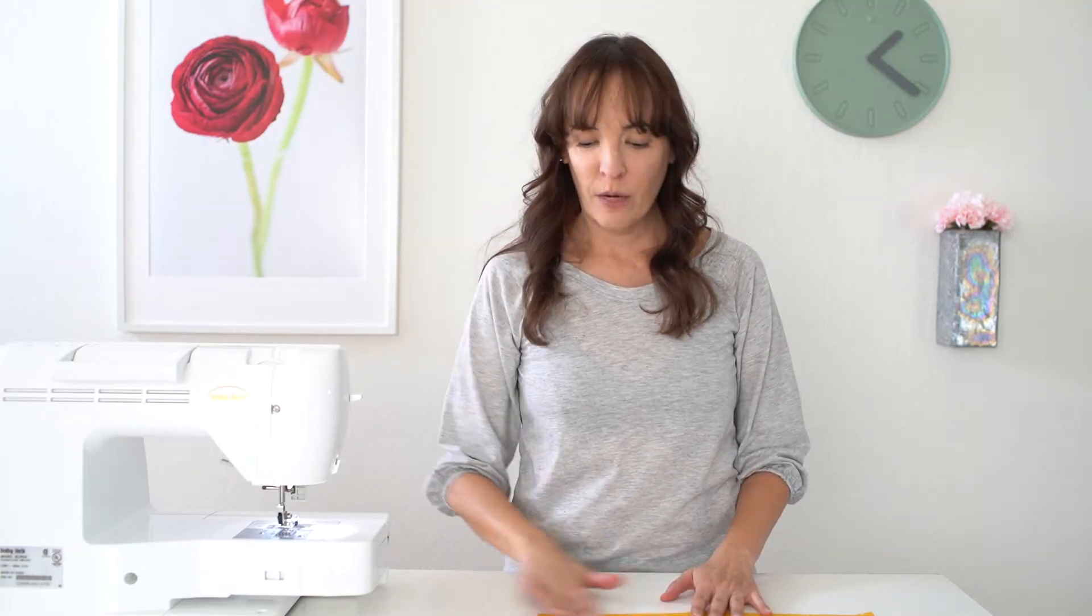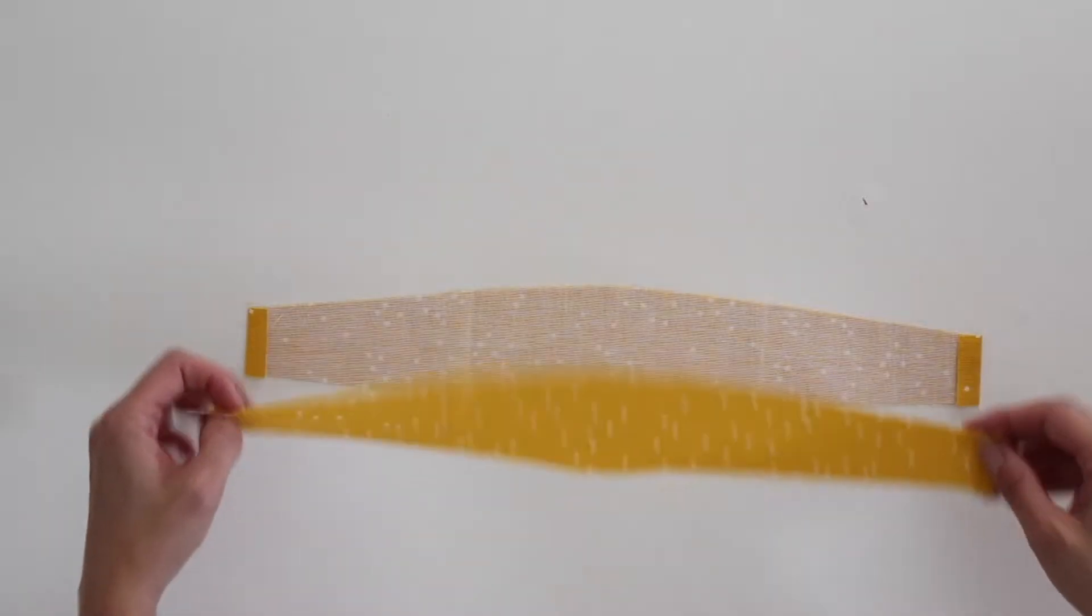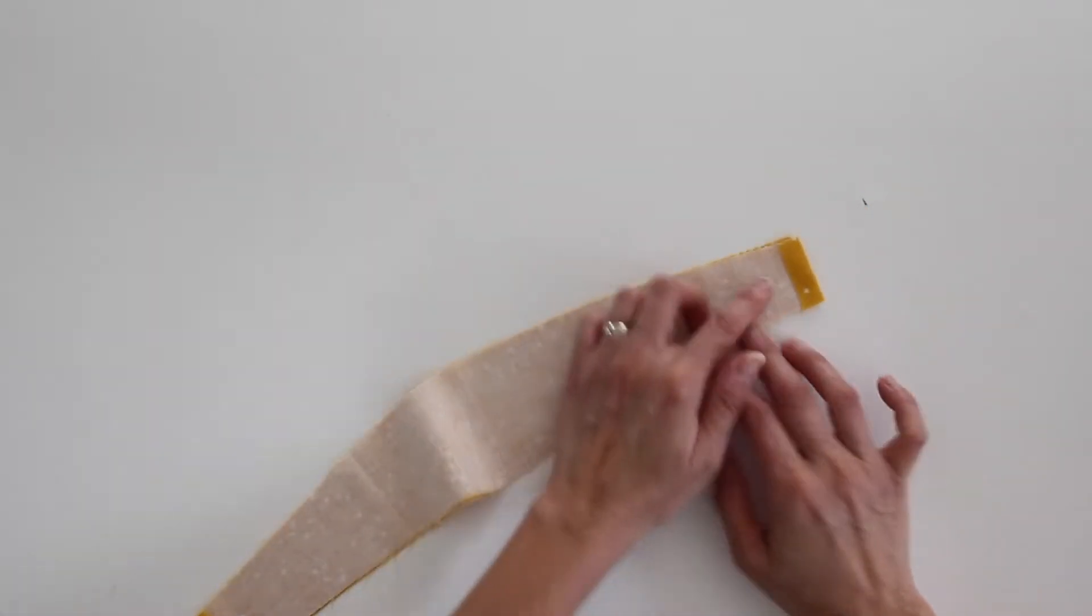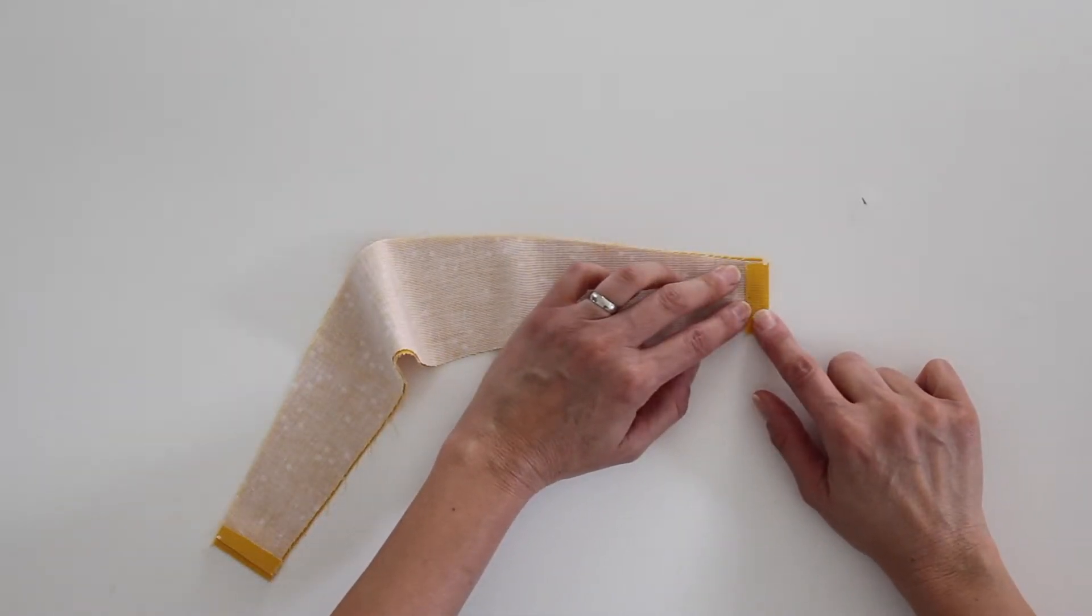So once you've visited that link and you've gotten your pattern, for the headband you're going to want to cut out two pieces of fabric. And then the first step is actually going to be to press up the ends three eighths of an inch.